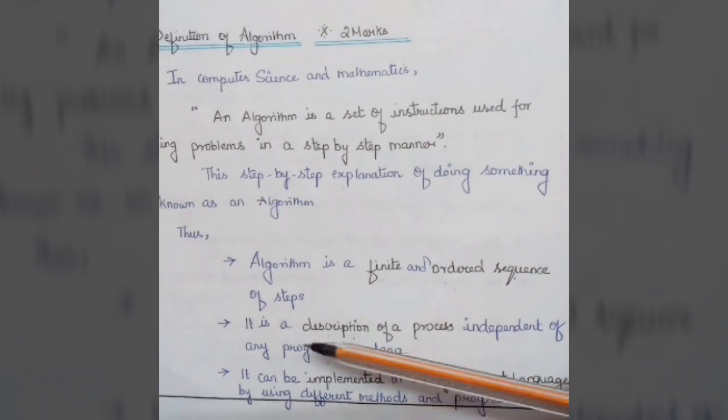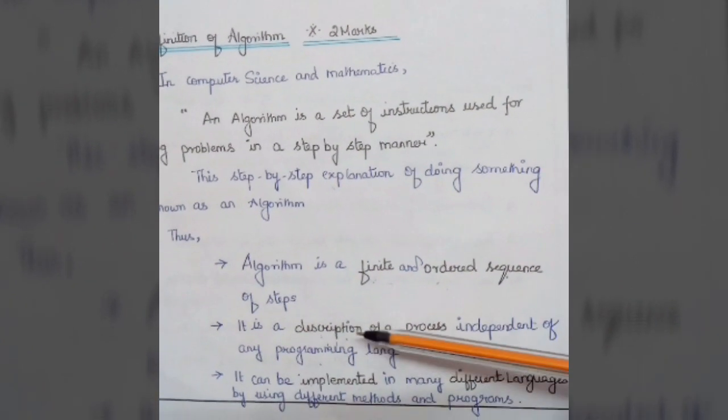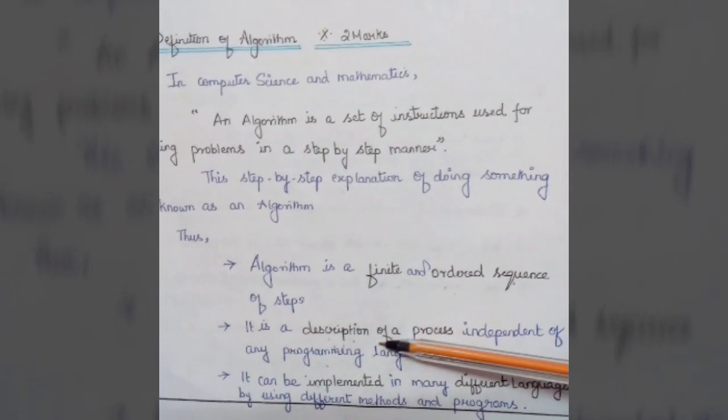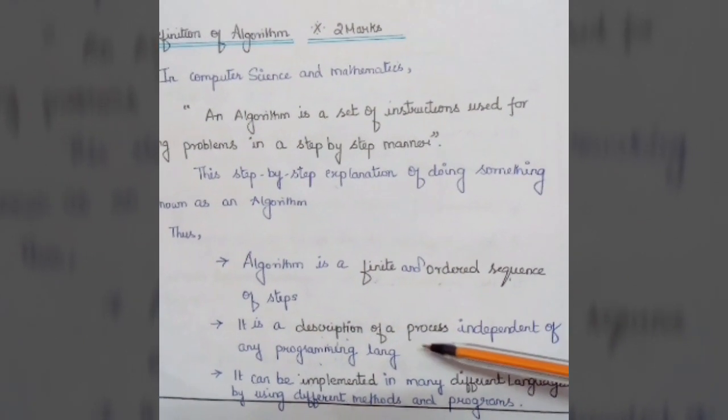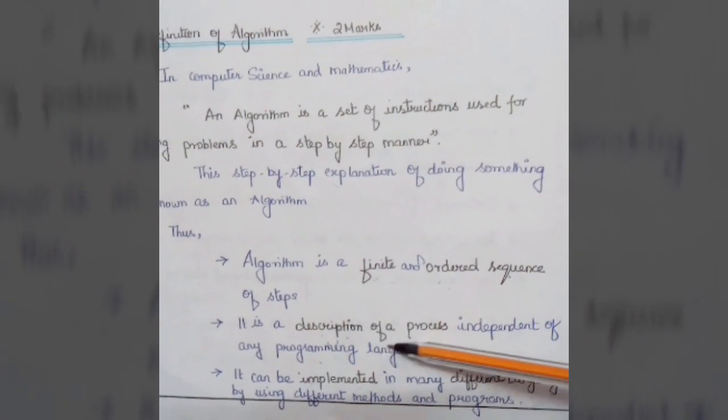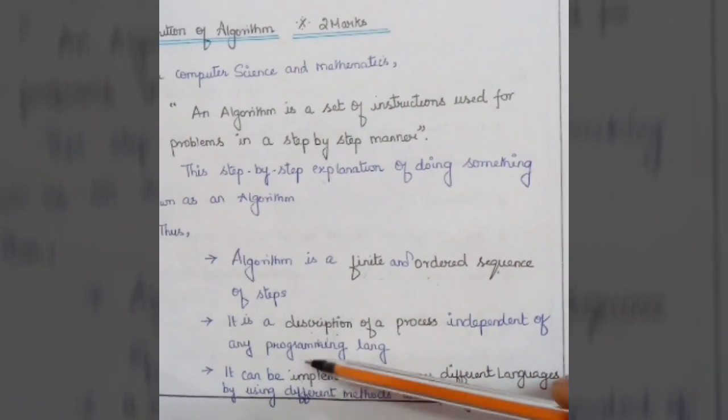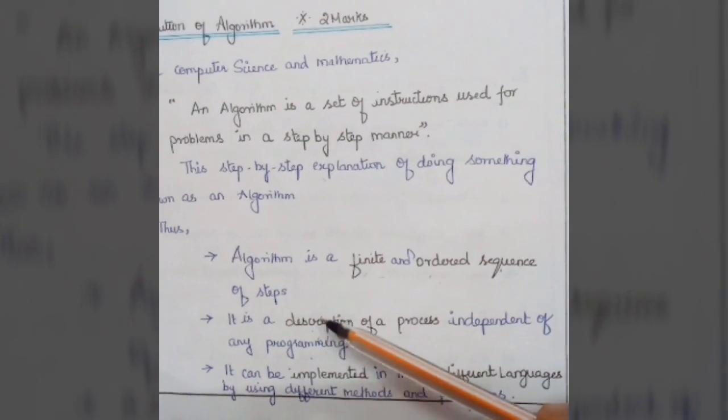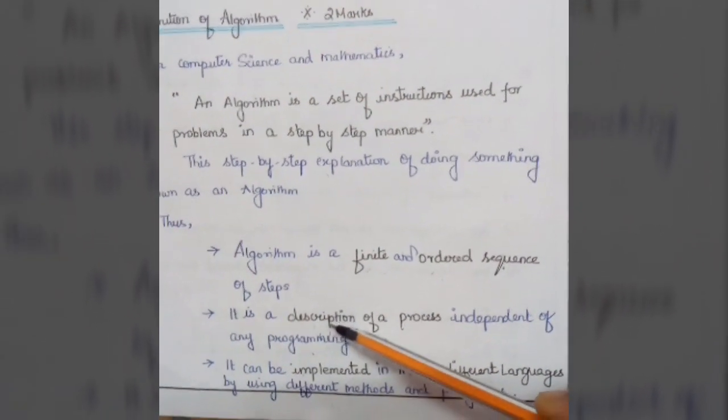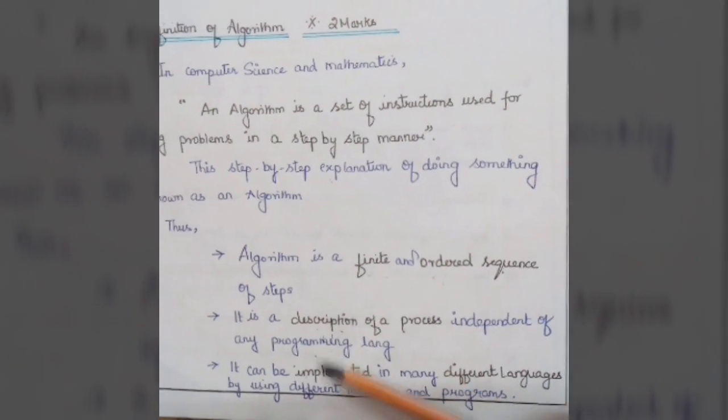The second characteristic is that it is a description of a process independent of any programming language. An algorithm is just a description of a process and is independent of programming languages. The third point is that it can be implemented in many different languages. It is a description of a process, but it can be implemented in different languages.